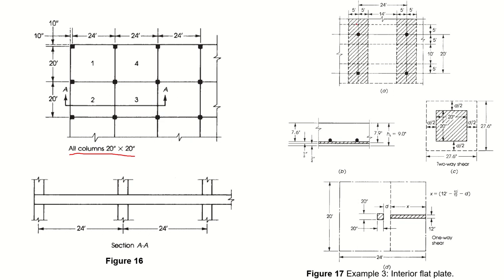Figure 17 shows the panel with column strips and middle strips. In the 24-foot direction, the column strips are 5 feet each (total 10 feet) and the remaining 14 feet is the middle strip. In the transverse direction, the column strip is 10 feet and the middle strip is also 10 feet, determined using the standard formulas.